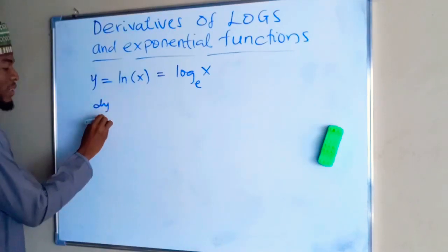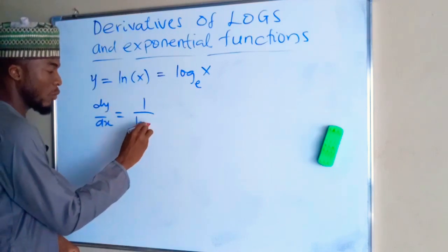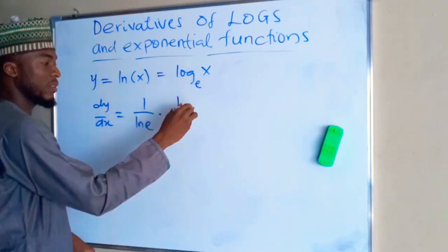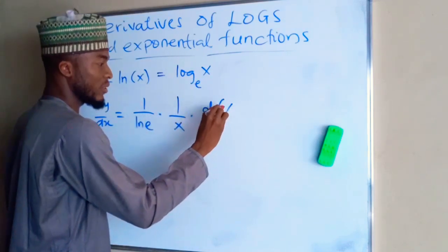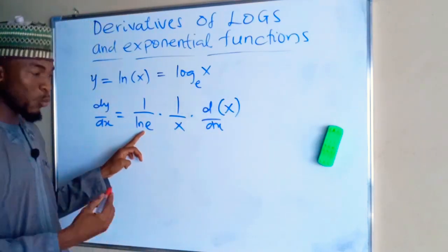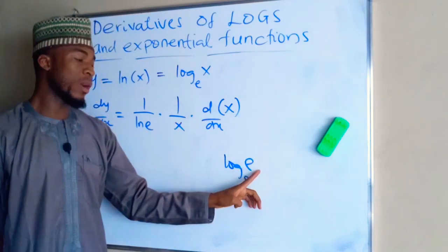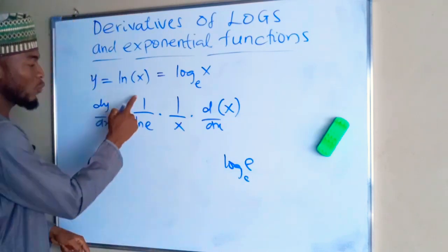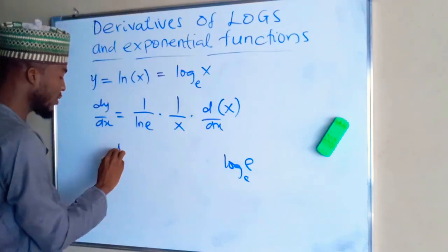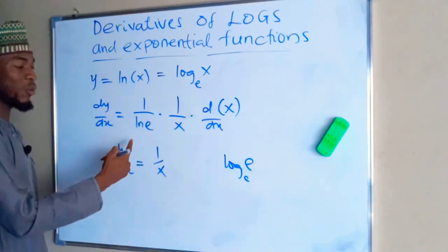dy over dx will be equal to 1 over natural log of e, which is the base, times 1 over the function x, times the derivative of the function with respect to x. Natural log of e is 1 because this can be written as log of e base e, and log of a number having the same base as the number is equal to 1. So 1 divided by 1 is 1 and the derivative of x is 1, so altogether dy over dx equals 1 over x.